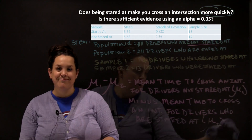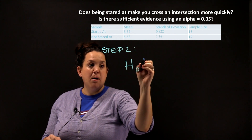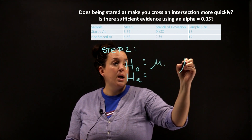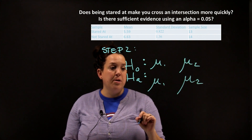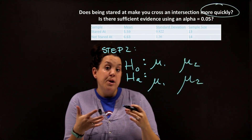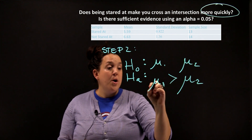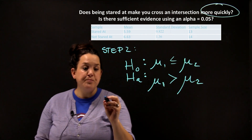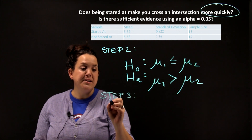Moving to step two, we make our hypotheses. We still have the null H-sub-O and the alternative H-sub-A, using the notation mu one and mu two from our parameter definition. Our research hypothesis goes in the alternative: we wanted to show that population one crosses more slowly, meaning their time is greater, so H-sub-A: mu sub one is greater than mu sub two. The corresponding null hypothesis is H-sub-O: mu sub one is less than or equal to mu sub two.